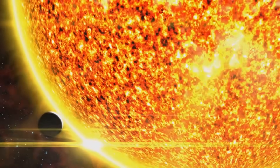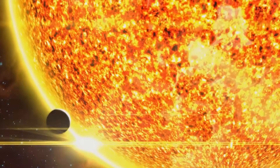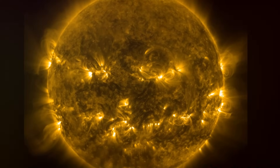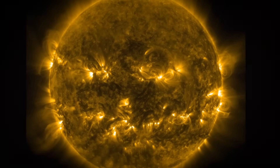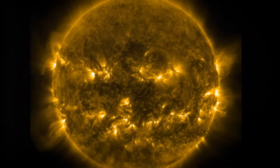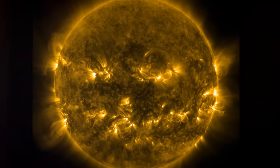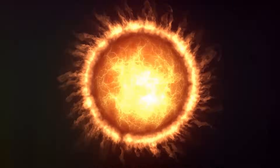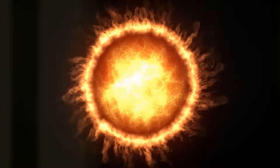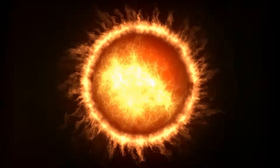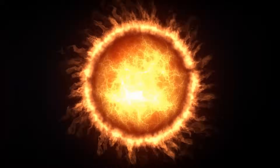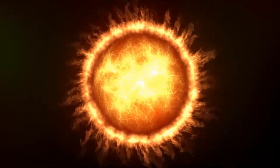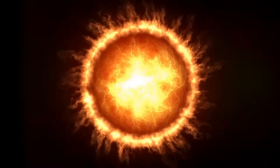Our journey begins with the sun, the star at the center of our solar system. The sun is a massive ball of hot plasma primarily composed of hydrogen and helium. Its core reaches temperatures of around 15 million degrees Celsius, or 27 million degrees Fahrenheit, where nuclear fusion occurs, converting hydrogen into helium and releasing immense amounts of energy.